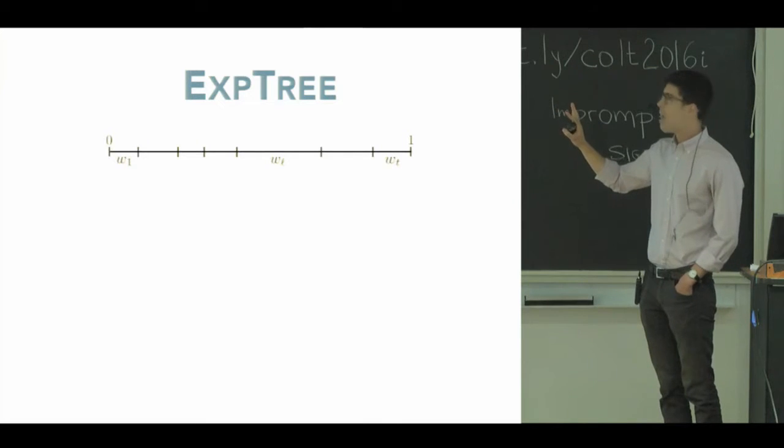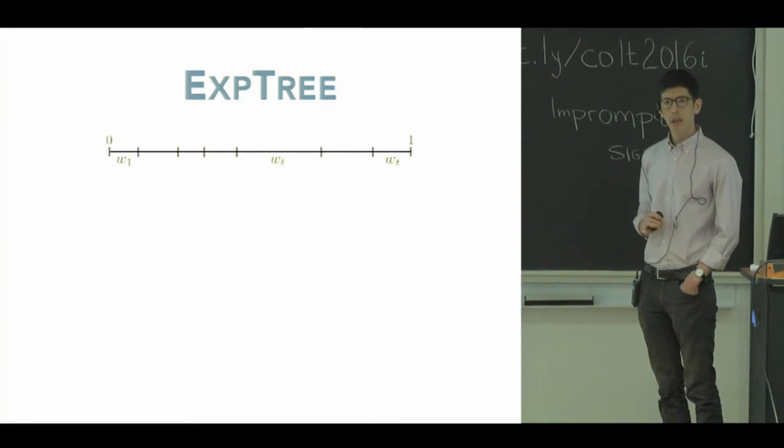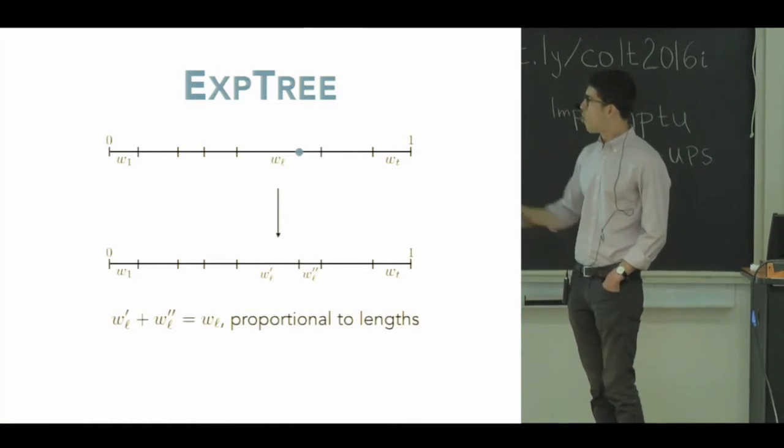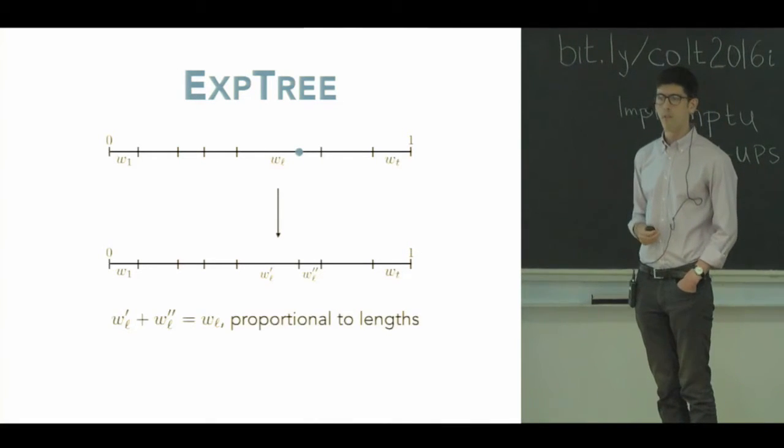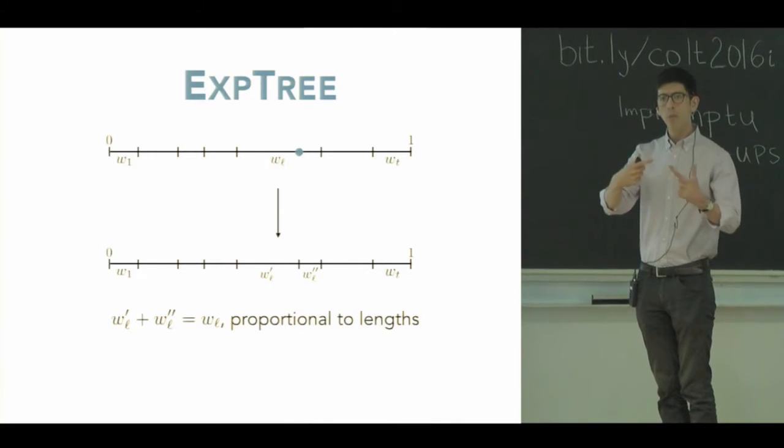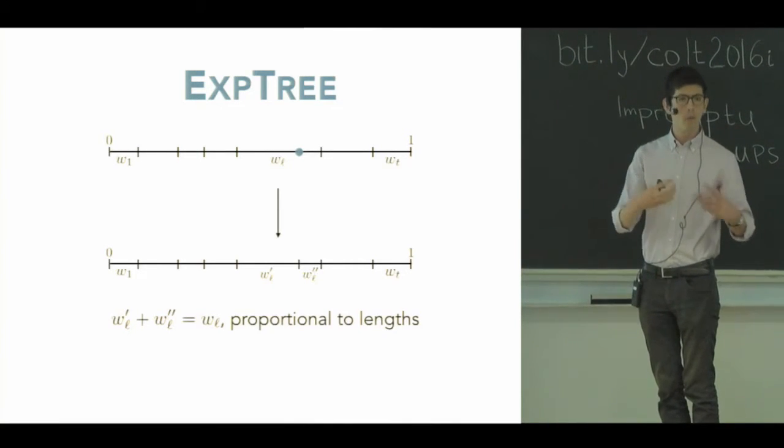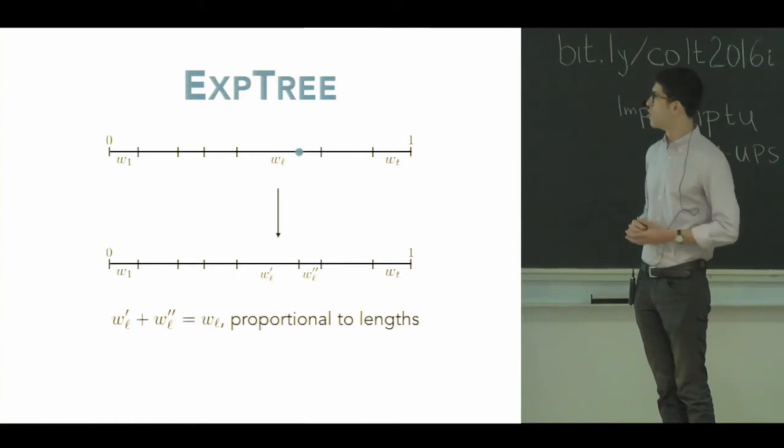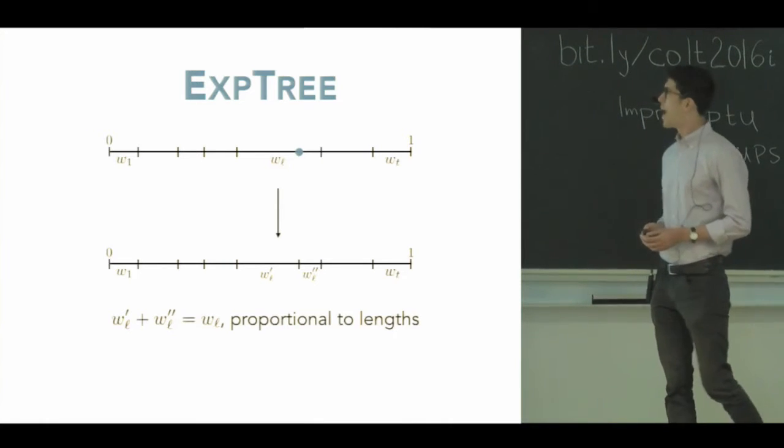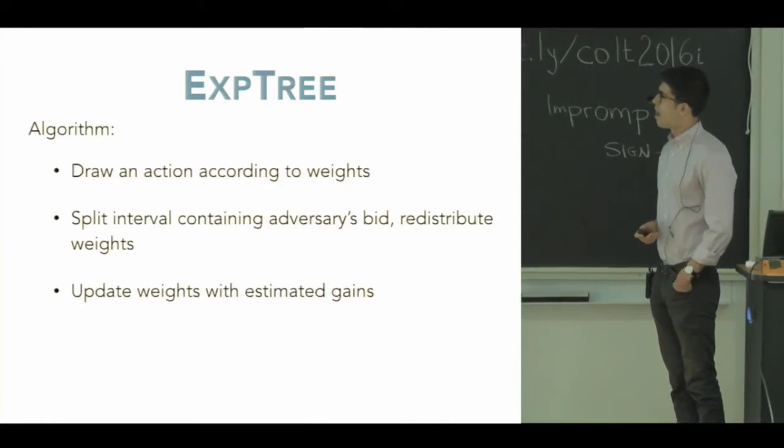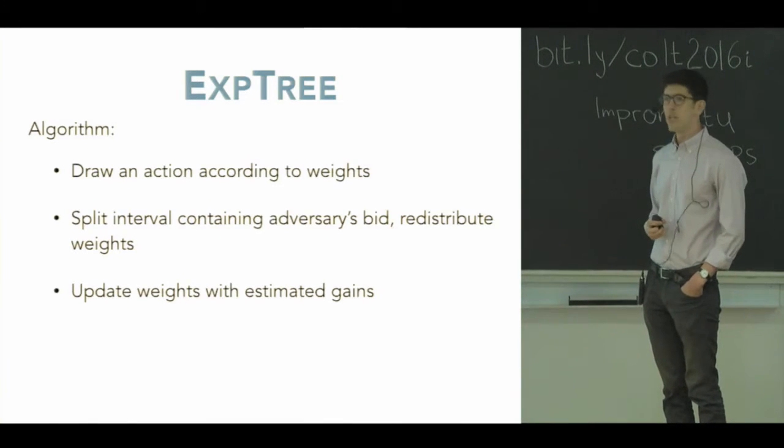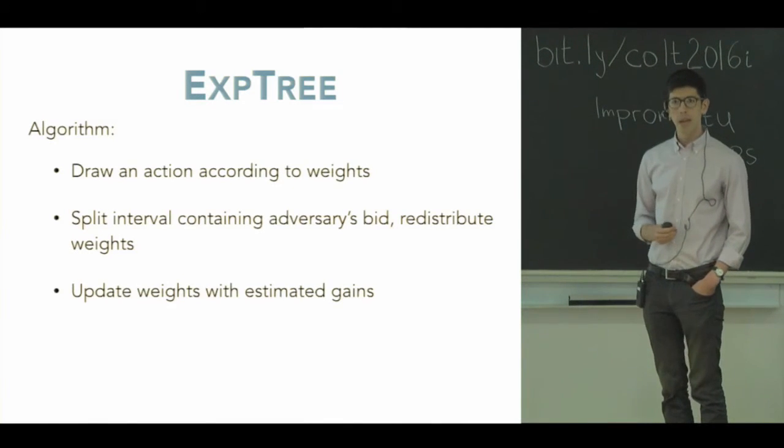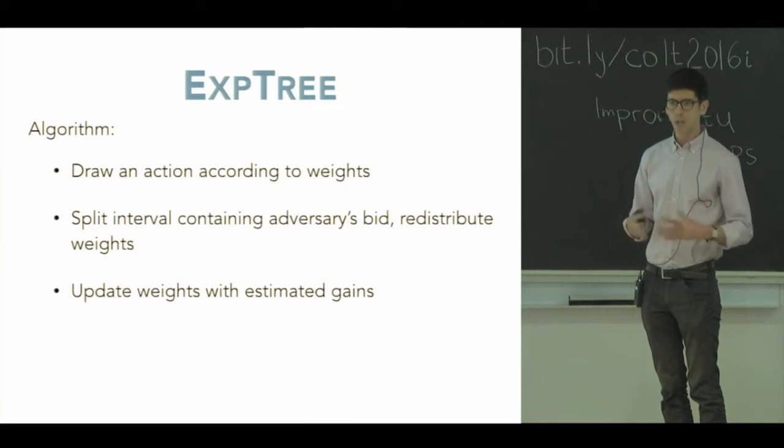What we're going to try to do is we're going to try to use a standard bandit algorithm on these intervals, but re-weigh them dynamically according to their length. So to be slightly more specific, we're going to maintain at each moment a set of weights on each interval, and then whenever a new opponent maximum bid comes in, we're going to split the intervals that we had before and split the weights as well, repartitioning the weights proportional to the lengths of the intervals. So as the game progresses, we're building more and more actions and re-apportioning more and more mass, more and more weights from the other actions into these new ones. So this algorithm, which we call expTree after the EXP3 algorithm of Auer et al., goes like this. We draw an action according to the weights, we split the interval when we see the adversary's bids and redistribute the weights, and then we update weights with estimated gains.